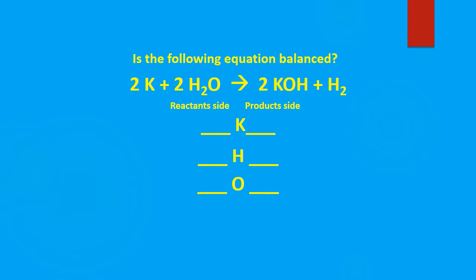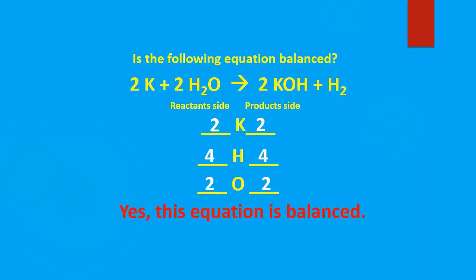Let's look at another one. So we have the elements potassium, hydrogen, and oxygen. We start with potassium — on the reactant side we have two atoms of potassium, and on the product side we also have two. We have four atoms of hydrogen on the left — two times two. And on the right we have two plus two: two times one gives us the first two, and two hydrogens gives us the second two, for a total of four hydrogens on the product side. Now on the reactant side we have two oxygens and two oxygens. Since all the elements are balanced on the left and on the right, we have equal amounts of each element on the reactant and product side — that tells us the equation is balanced.